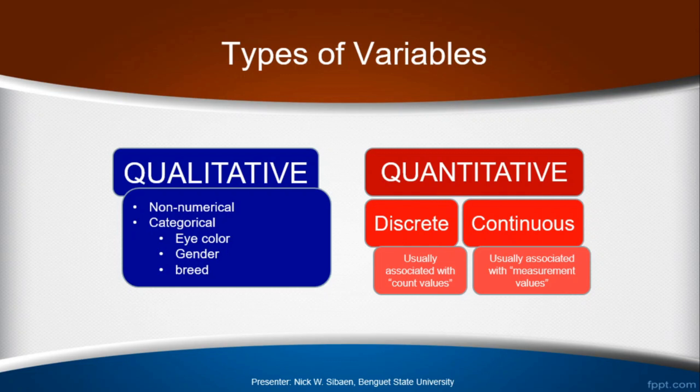Discrete variables are those that we can count — number of votes, number of classrooms, number of chairs, and so on. The value of a discrete quantitative variable is only meaningful for integral or whole numbers. In other words, discrete variables cannot have decimal values. It would be meaningless to say there are 2.25 people inside a classroom or 1,005.5 votes for a politician.